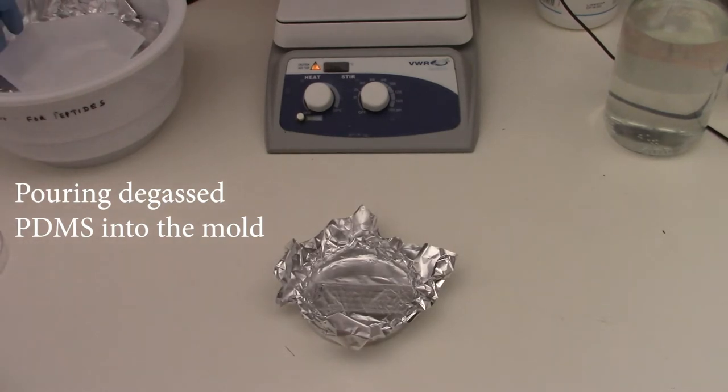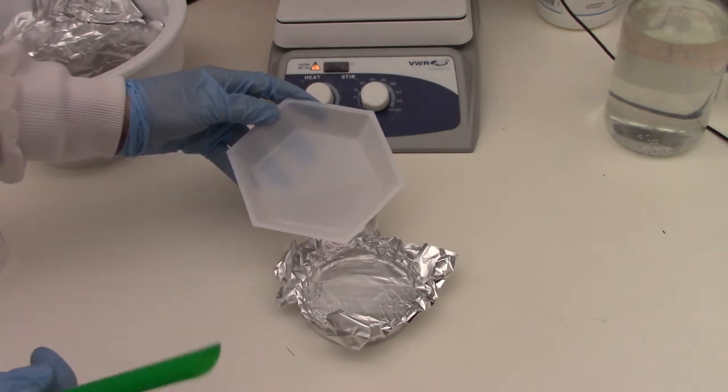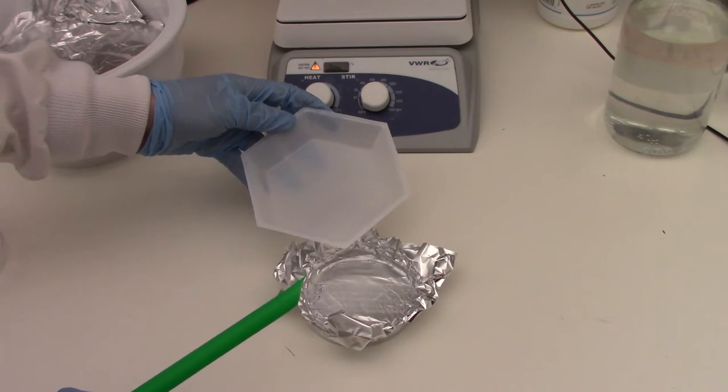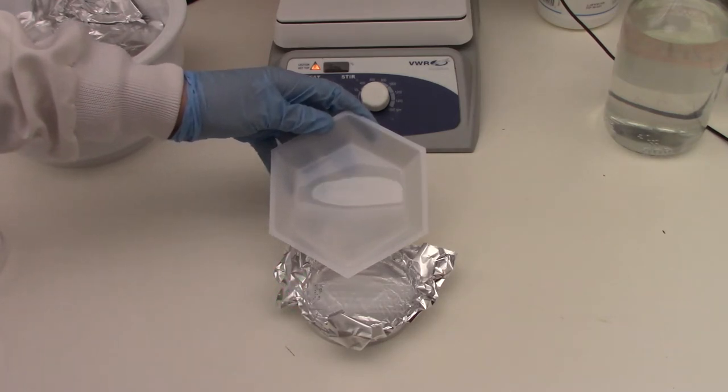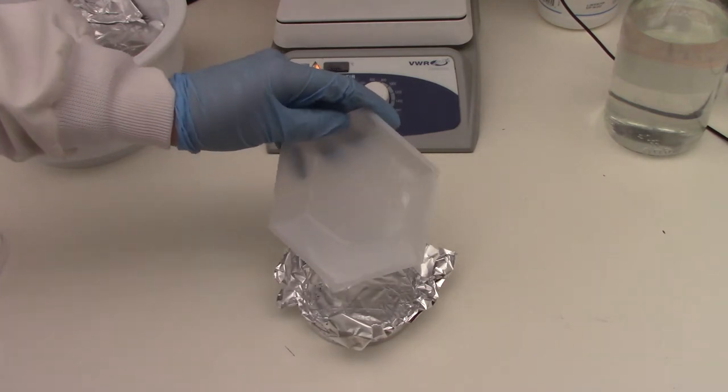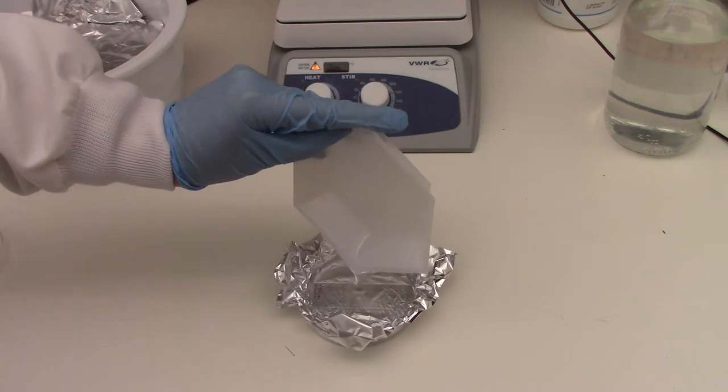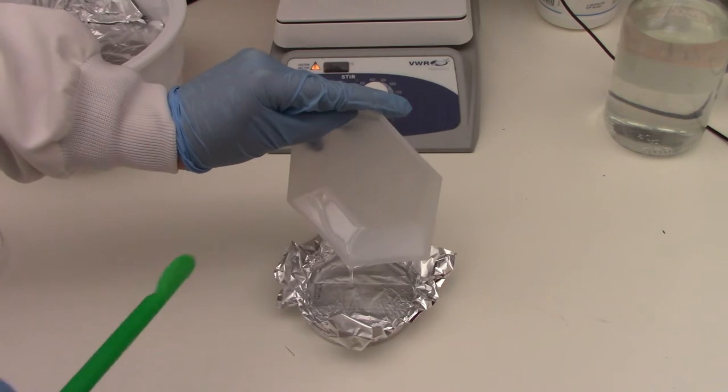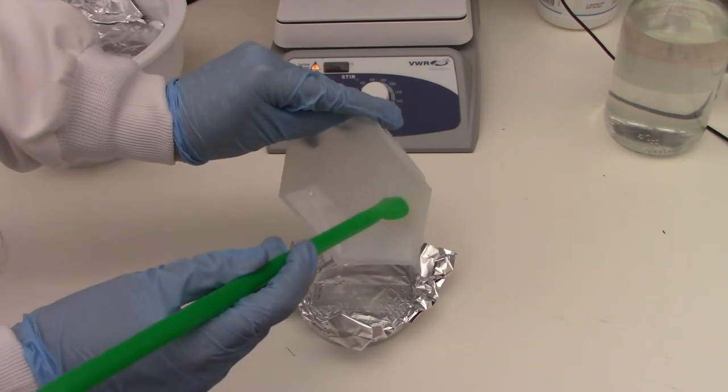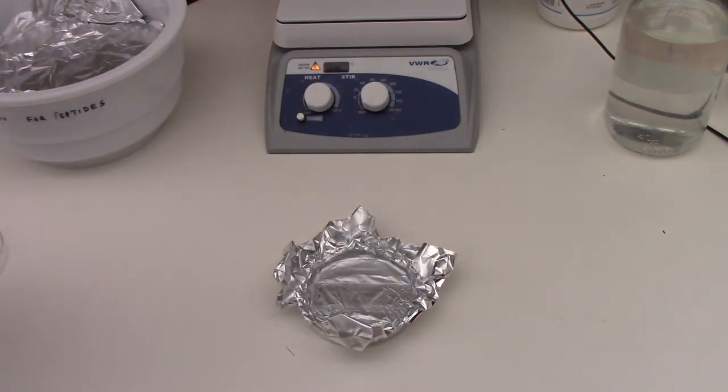So now that we degassed our PDMS, we'll take our boat and then our liquid boat and pour it into the features. Since we degassed it in a separate container from our master to try to avoid introducing air bubbles, we'll pour slowly and also close to the surface. And I like to just pour over the center of my master mold. Then as an added tip, if you want to get more of the PDMS out of your boat, you can actually take one of these spatulas and scoop it out, depending how thick you want your final PDMS device to be.